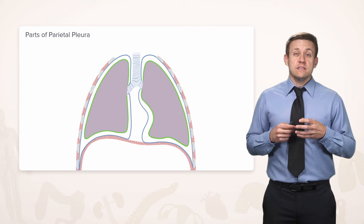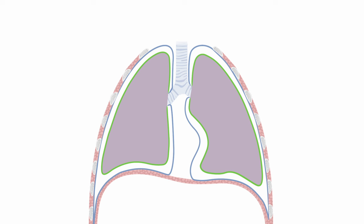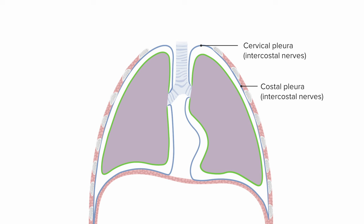Different innervations affect different parts of the parietal pleura. Starting at the area near the superior thoracic aperture, which is relatively close to the neck, we call that the cervical pleura, and it's innervated by the nearby intercostal nerves. Similarly, the parietal pleura underneath the ribs is called the costal pleura, and it's also innervated by the surrounding intercostal nerves.